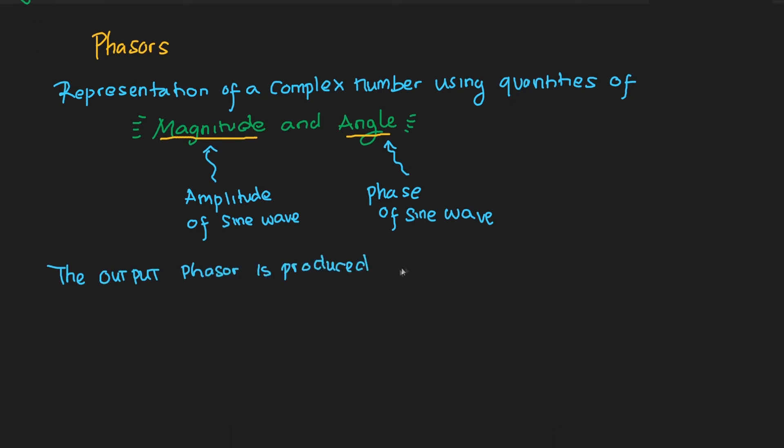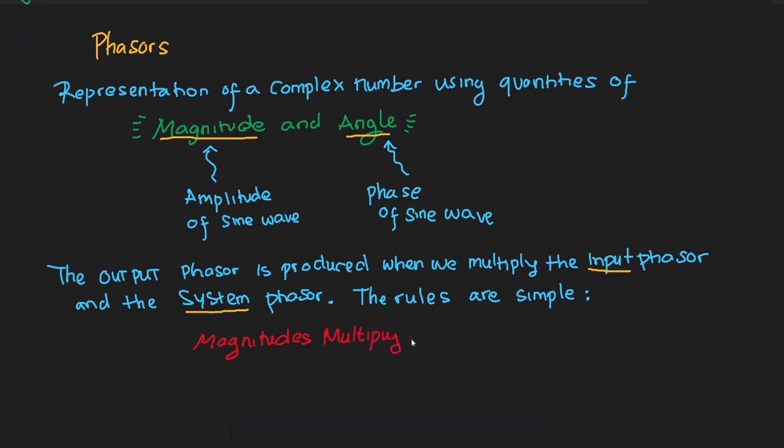The output phasor is produced when we multiply the input phasor and system phasor. When we multiply complex quantities, we multiply the magnitudes and add the angles.